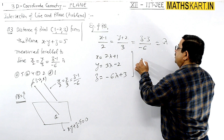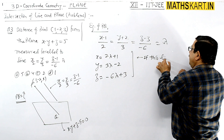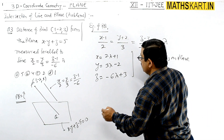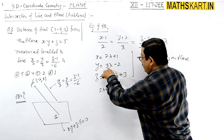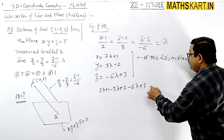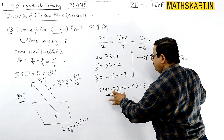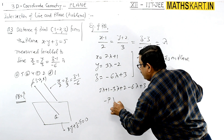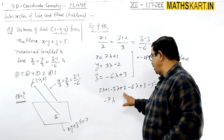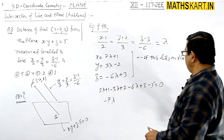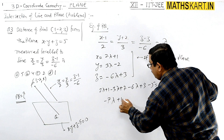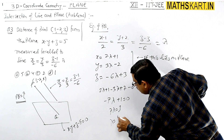If this point lies on the plane x - y + z - 5 = 0, substituting: (2λ + 1) - (3λ - 2) + (-6λ + 3) - 5 = 0. Simplifying: 2λ - 3λ - 6λ = -7λ, and constants: 1 + 2 + 3 - 5 = 1. So -7λ + 1 = 0, giving λ = 1/7.